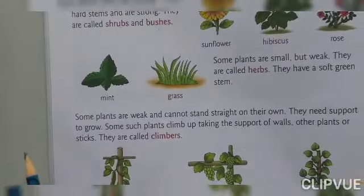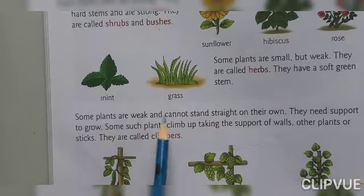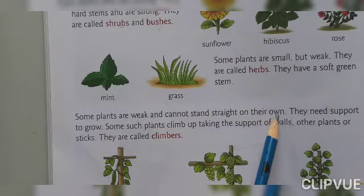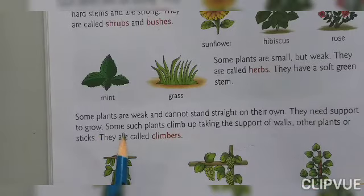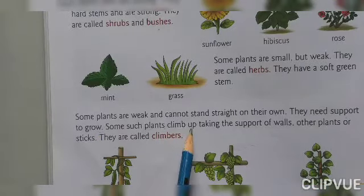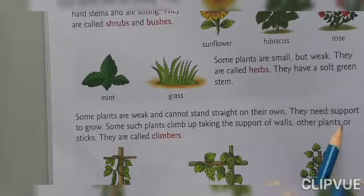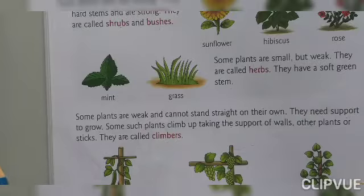Next, in your textbook: some plants are weak and cannot stand straight on their own. They need support to grow. Some such plants climb up, taking the support of walls, other plants, or sticks. They are called climbers.